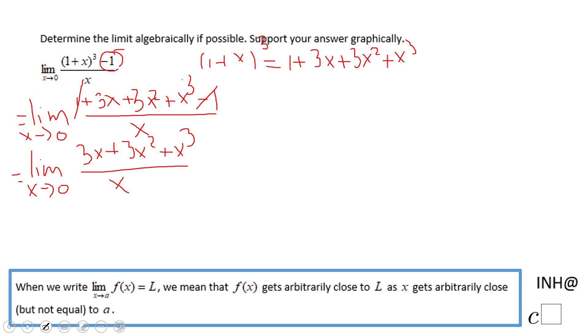Now the numerator if you notice has three terms: 3x, 3x², and x³. We can factor out an x and we're going to have x times (3 + 3x + x²) over x, and now you notice this x cancels out.